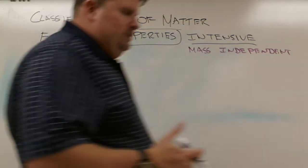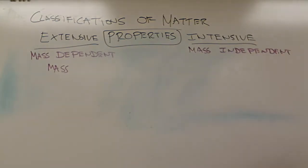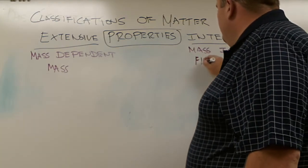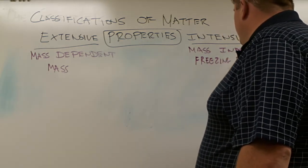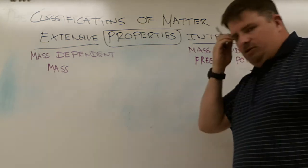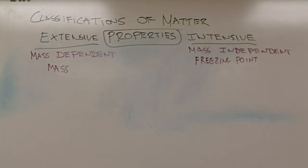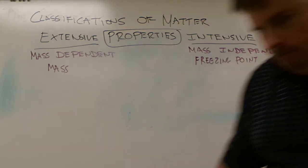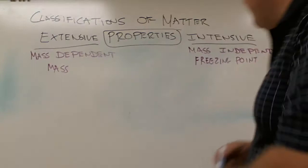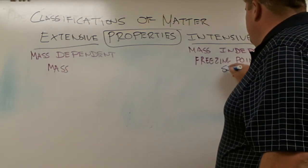Intensive properties are things that are not mass dependent, such as freezing point or melting point or the boiling point. Any phase transition is going to be listed as an intensive property. So freezing point is the transition that we get between something that's a solid and something that's a liquid. Freezing point is solids going to liquids. These are the states of matter.